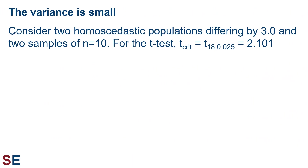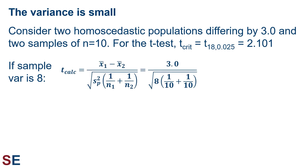Now let's look at the effect of variance. Consider two populations with means that differ by 3, from which we take two samples of size 10. The critical value for 18 degrees of freedom and an alpha value of 0.025 will be 2.101. When the population variance is 8, the most likely sample variance will also be 8. Plugging everything in gives a difference of 3 in the numerator, pooled variance of 8, and sample sizes of 10. Calculating this out gives a t-calculated value of 2.372, which is larger than 2.101, and we would correctly reject the null hypothesis of equal population means.